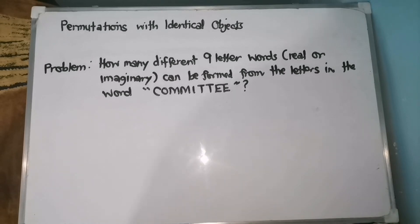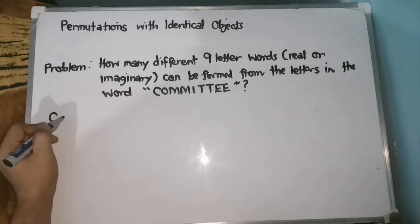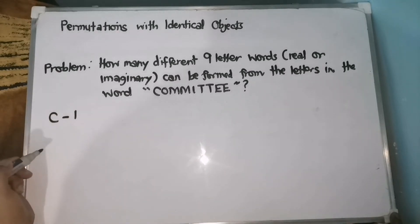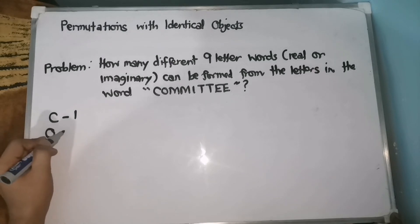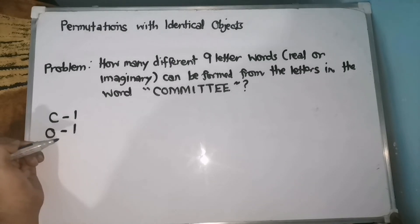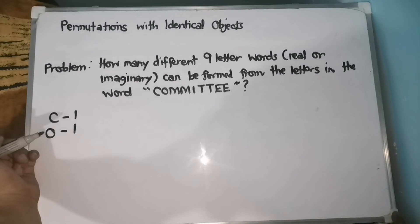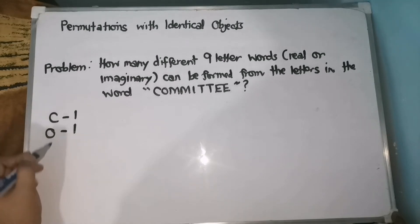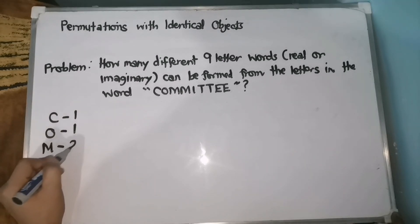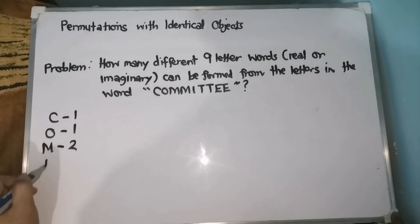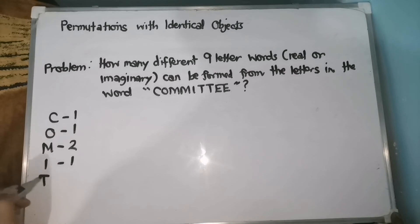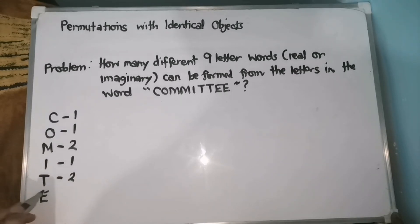I-take note muna natin yung mga letters. C — there is only one C. O — there is also one O. M — there are two M's. I — there is one I. T — dalawa ang T. At yung E natin ay dalawa din.